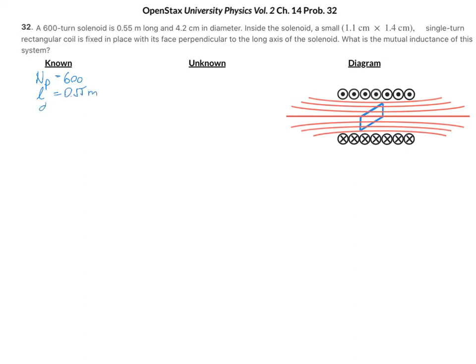The diameter of the solenoid, of the primary, is 4.2 centimeters. Inside the solenoid, there is a small single-turn rectangular coil, so the number of turns in the secondary is 1. The area of the secondary is 1.4 times 1.1 times 10 to the negative 4 square meters. And we are looking for the mutual inductance of this system.